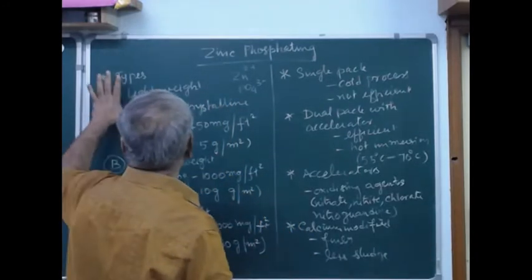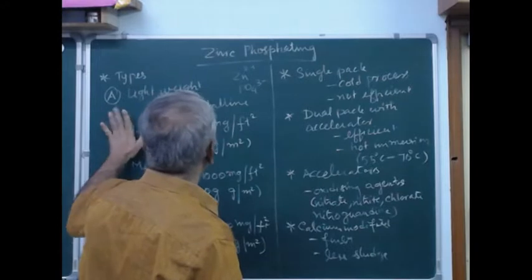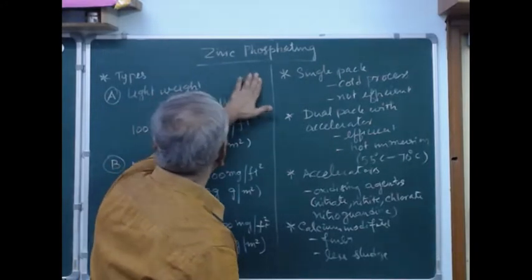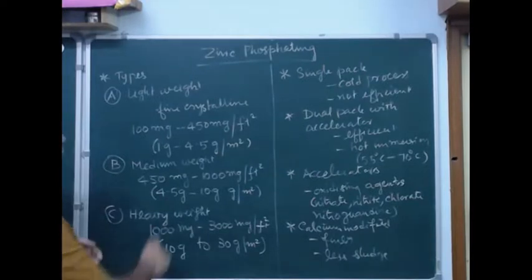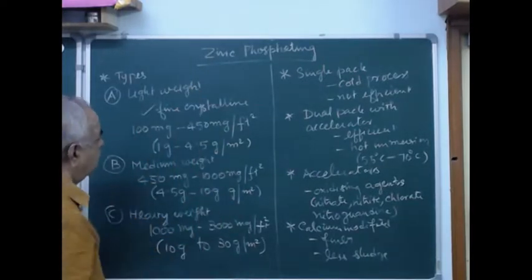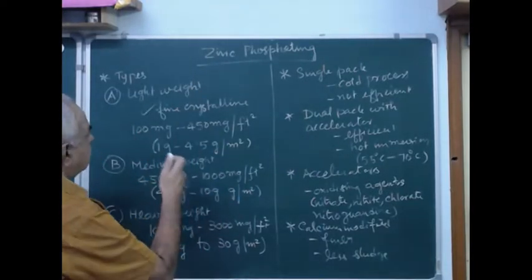Here, we have three types of Zinc Phosphate. One is Lightweight Zinc Phosphate - it is fine and crystalline.